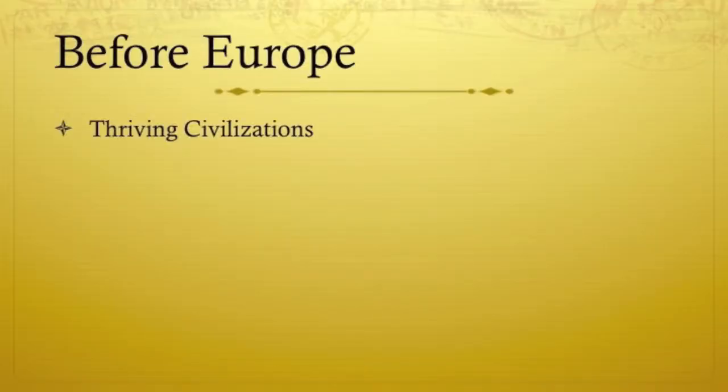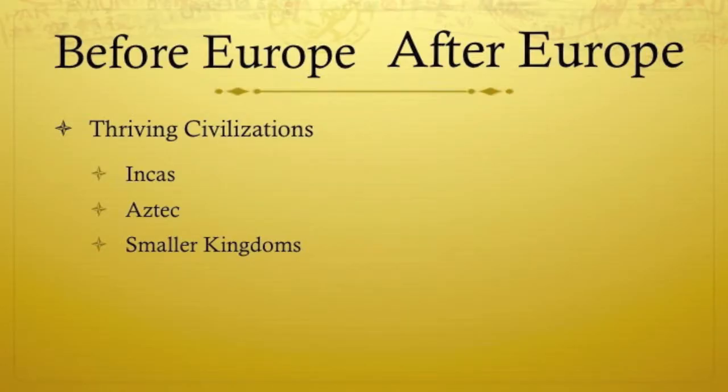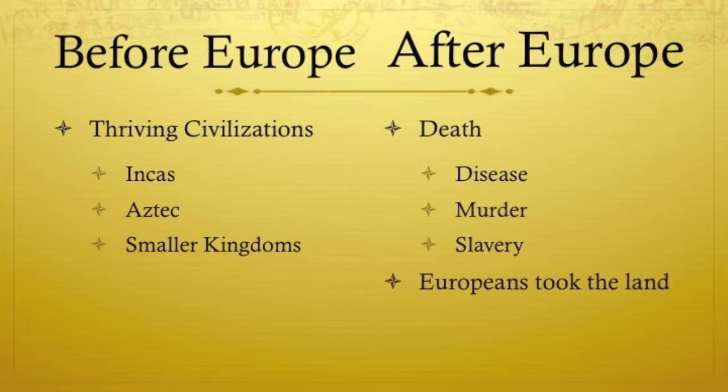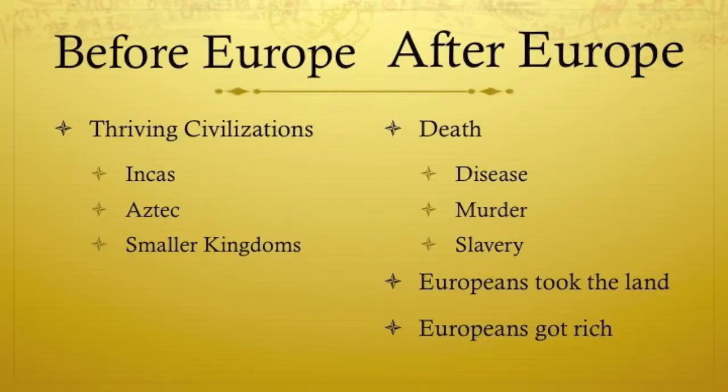Remember that before the Europeans showed up, there were a few thriving civilizations, like the Incas and Aztecs, and many more smaller kingdoms. In one of history's great tragedies, the vast majority of these people were killed by disease, murder, and slavery. Their land was stolen, and the silver, sugar, and other raw materials that came from their land enriched European conquerors.